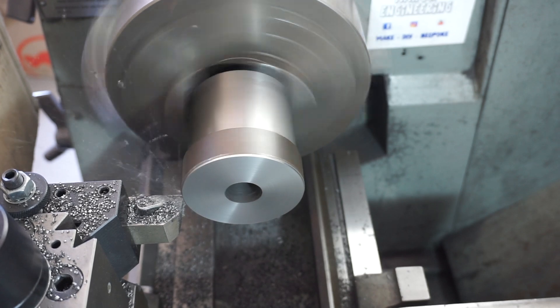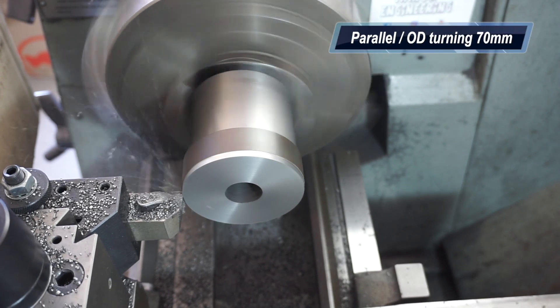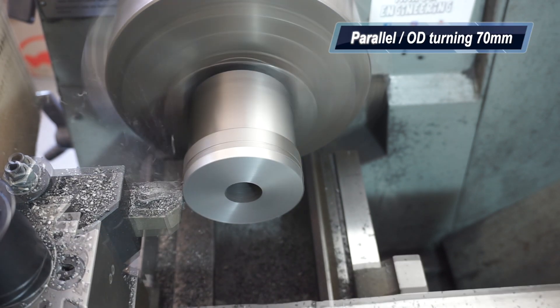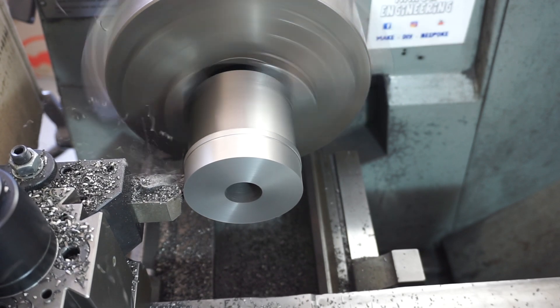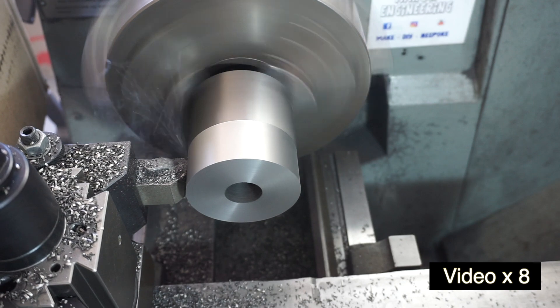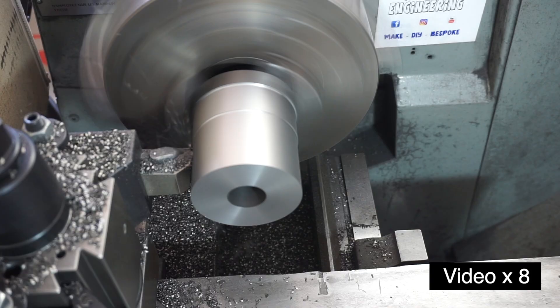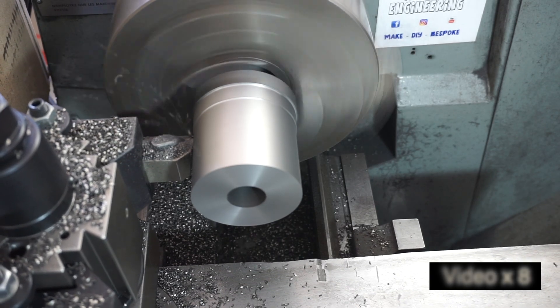Here we go now, we're going to turn that down to size and that size I need to hit is 70mm. However this is not critical because it's just an outside diameter. It doesn't do anything apart from form the outside edges of the cooling fins.